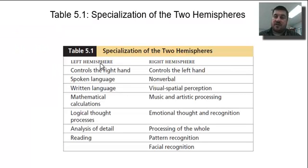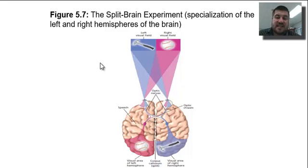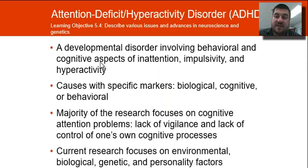Here's another table of which side of the hemispheres each function is controlled by. And here's the split brain experiment, where you can see the different visual fields — it's not just about closing your left eye; you have different visual fields available.